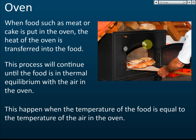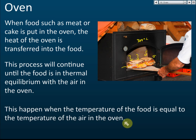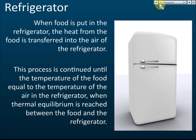Applications of thermal equilibrium: the first one is the oven. When you put a bun into an oven, the oven temperature is higher, so there is a net heat transfer from the oven to the bun until the bun reaches the same temperature as the oven — say 300 degrees Celsius. When food such as meat or cakes is put into an oven, heat transfers from the oven to the food until the food is in thermal equilibrium with the air in the oven.